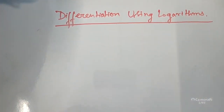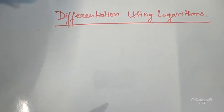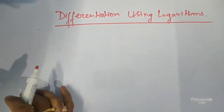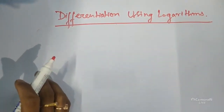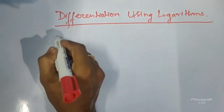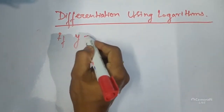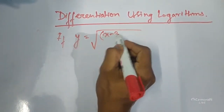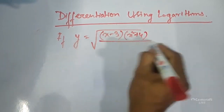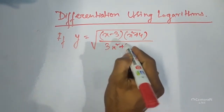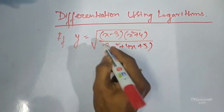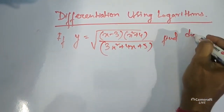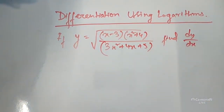Here we learn how to differentiate using logarithms. Especially, whatever function is given, those functions will have some power contained in them. To differentiate those functions will be very difficult if you do not take log both sides. For example, if y equals the square root of (x minus 3) times (x squared plus 4), divided by (3x squared plus 4x plus 5) is given.